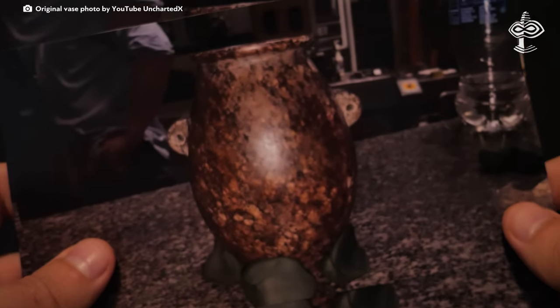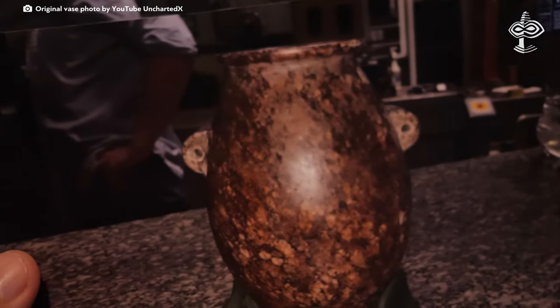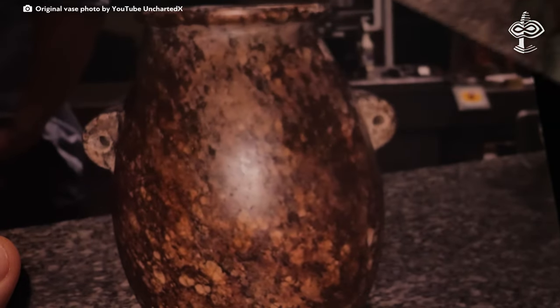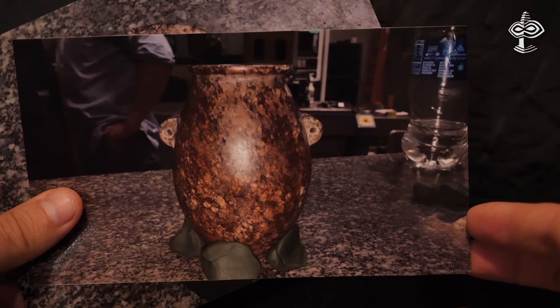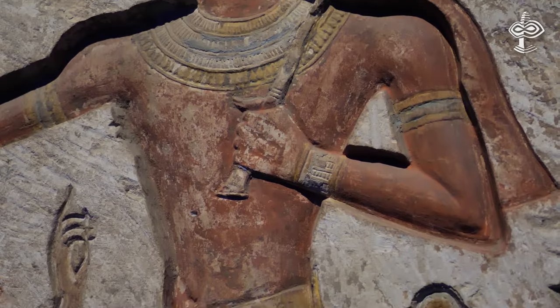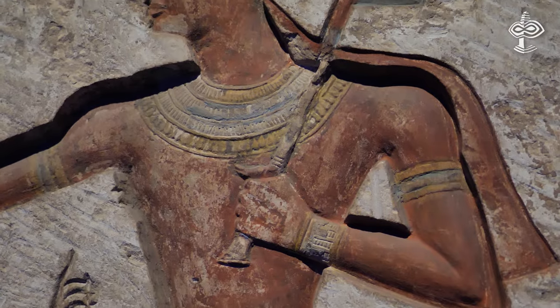This artifact, a granite vessel from ancient Egypt, is estimated to be over 5,000 years old, possibly even older, and predates the first pharaoh dynasties.